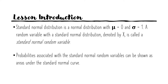For our lesson introduction, the standard normal distribution is a normal distribution with a population mean equal to 0 and a population standard deviation equal to 1. One of the properties of the normal curve is that your mean, median, and mode coincide at the center. That's why your population mean is equal to 0 and your population standard deviation is equal to 1. You need to take note of this.